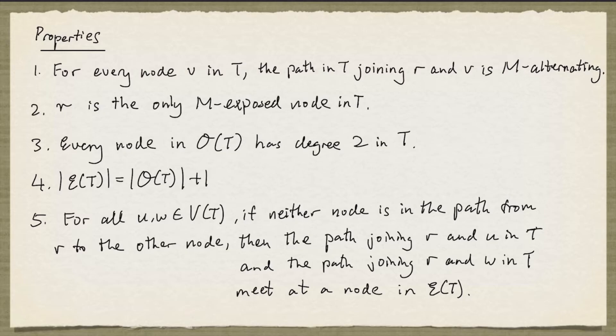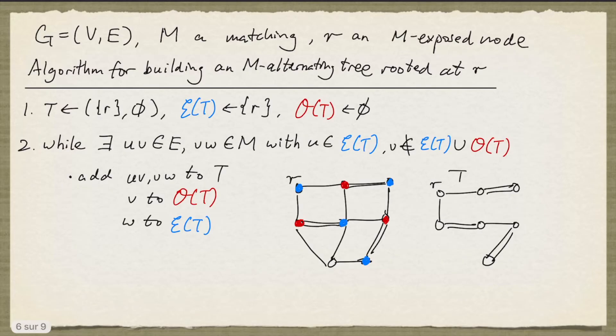So how do we make use of the M-alternating tree to find an M-augmenting path? Let's go back to this example. Here, we see that there's an edge coming out of this even node to an M-exposed node. And we have an M-augmenting path here, because R is M-exposed as well.